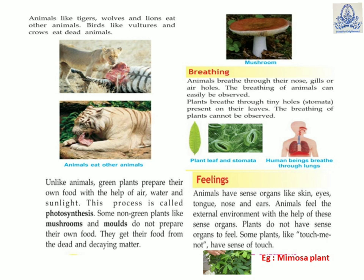Now, breathing: animals breathe through their nose, gills, or air holes, and the breathing of animals can be observed. Plants breathe through tiny holes called stomata, present on their leaves. The breathing of plants cannot be observed.